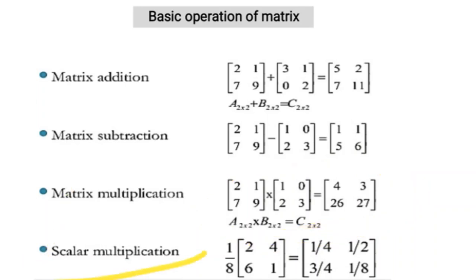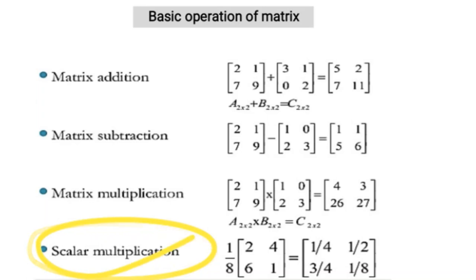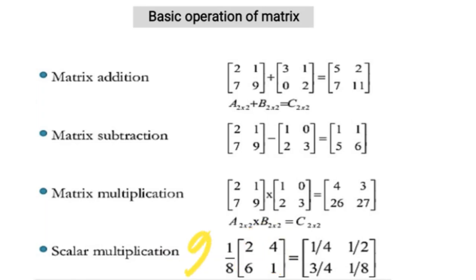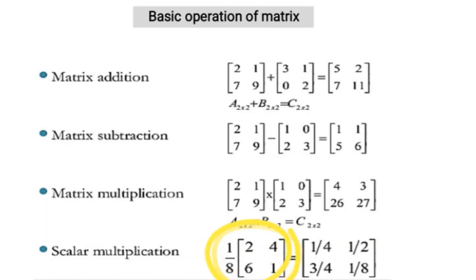This operation is also known as scalar multiplication. Scalar multiplication means taking any matrix and multiplying it by a scalar — any particular number like 2, 1, 4, or 5. Here a 2×2 matrix [2, 4; 6, 1] is given and you have to multiply it by 1/8. You multiply this scalar into all terms of the matrix.